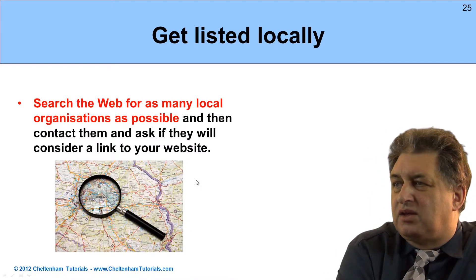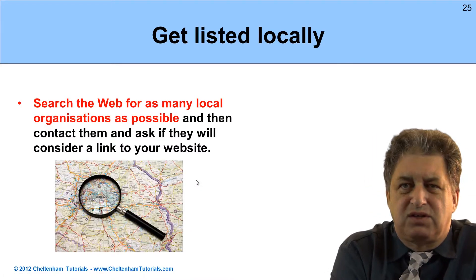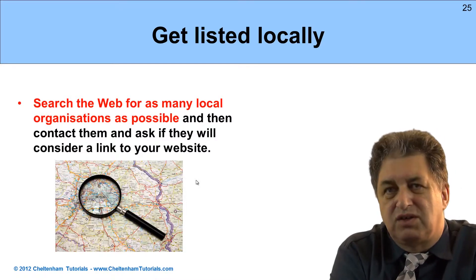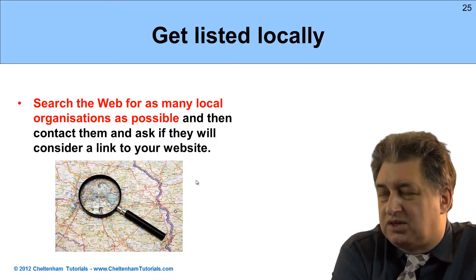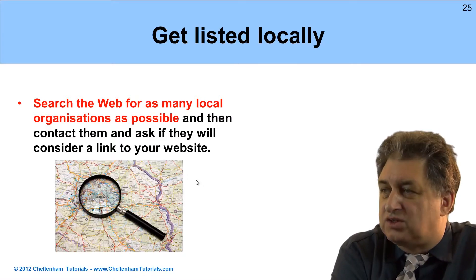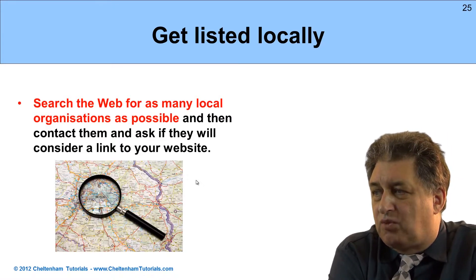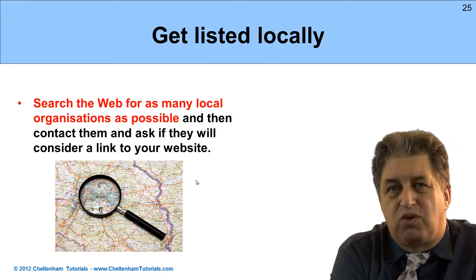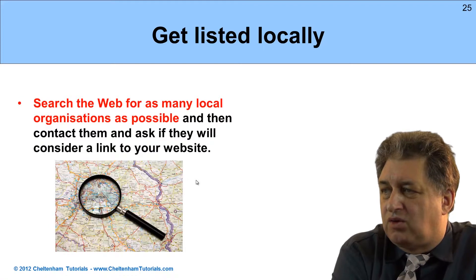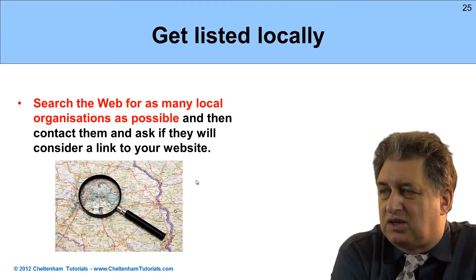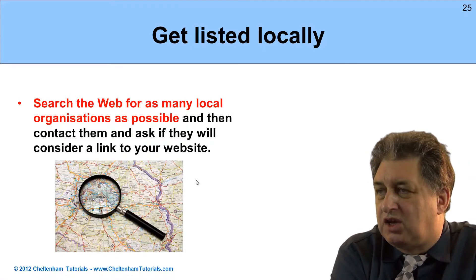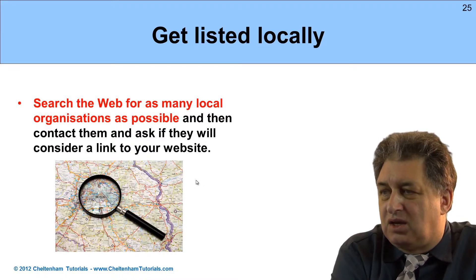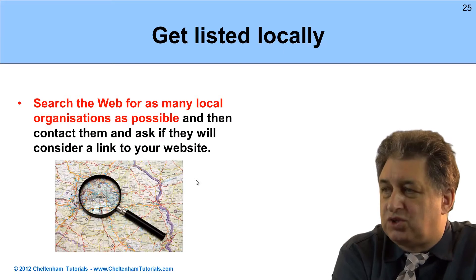Getting listed locally: search the web for as many local organisations as possible. Contact them and ask if they'll consider a link to your website. These could be ideally related to your particular industry, or they could simply be local websites that deal with your particular area. For instance, if you were a plumber and there was a local website about your city or suburb, you might ask them to include a link to you. Don't ask, don't get — just give it a try.